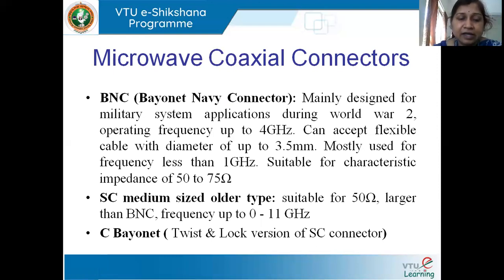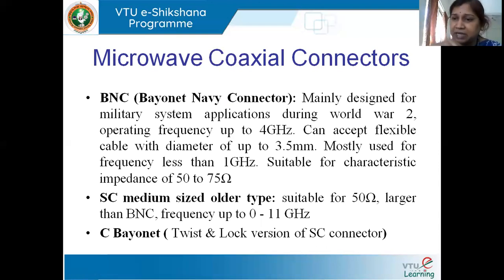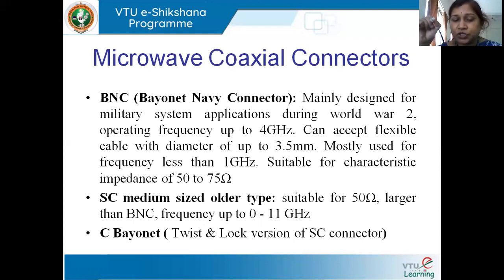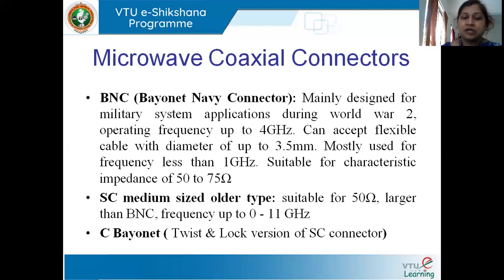Coming to the next connector, the SC is a medium-sized older type connector suitable for a characteristic impedance of 50 ohms. It is somewhat larger than BNC and can be used up to 11 gigahertz. And the next one is the C-Barnet connector, which is a twist-and-lock type. Even this BNC — you put it and twist, then it gets locked to the CRO or signal generator. Put it, twist, and it locks; you cannot remove it until you twist again. That is your C-Barnet twist-lock version of the SC connector.